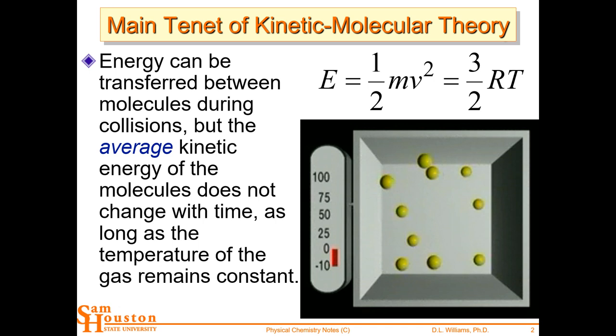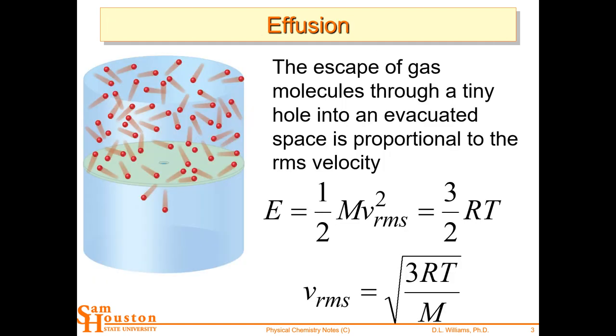Boltzmann was an atomist talking about particles and relating the equipartition theorem of energy — the translation of particles in space, 3/2 RT — to just baseballs and cannonballs, one-half mv squared. Setting these together, we look at this velocity distribution related to temperature and the gas constant. This is the particular equation we get for the root-mean-squared velocity of particles. This is Graham's law: the rate of effusion through a pinhole from a high-concentration area to a vacuum is proportional to this root-mean-squared velocity.